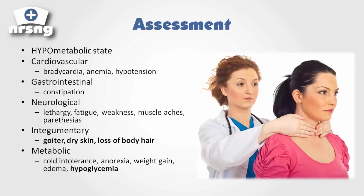So how are we going to assess this? Think the opposite of hyperthyroidism. We're going to have bradycardia, anemia, hypotension, constipation — everything's slowing down — lethargy, fatigue, weakness, muscle aches. Neurologically, just think decreased state of awareness and alertness. We could have dry skin and loss of body hair.